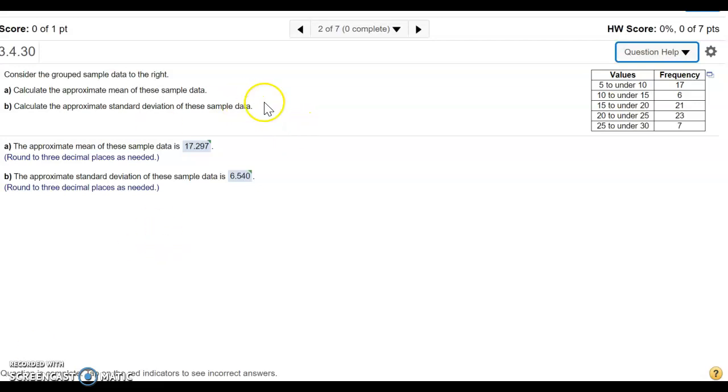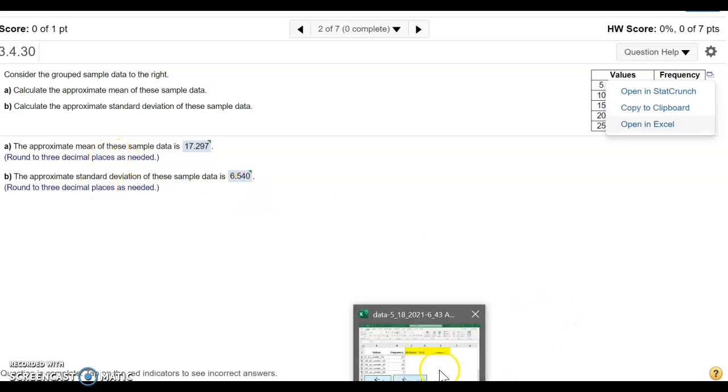I'm going to show you how to use the formula and use it in Excel to help organize the data. So here we have some data, and I just clicked on this and opened in Excel, and we're trying to find the approximate mean and the approximate standard deviation.